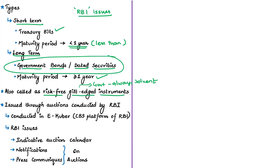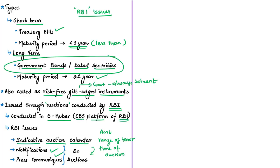Government securities are issued through auctions conducted by the Reserve Bank of India on an electronic platform called eKuber, which is the core banking solution platform of RBI. RBI consults with the Government of India and issues an indicative half-yearly auction calendar consisting of details of auctions — including the amount of borrowing, range of tenor or maturity period, and the time in which auctions will be held. Before auctions, required information through notifications and press releases will be released by RBI.